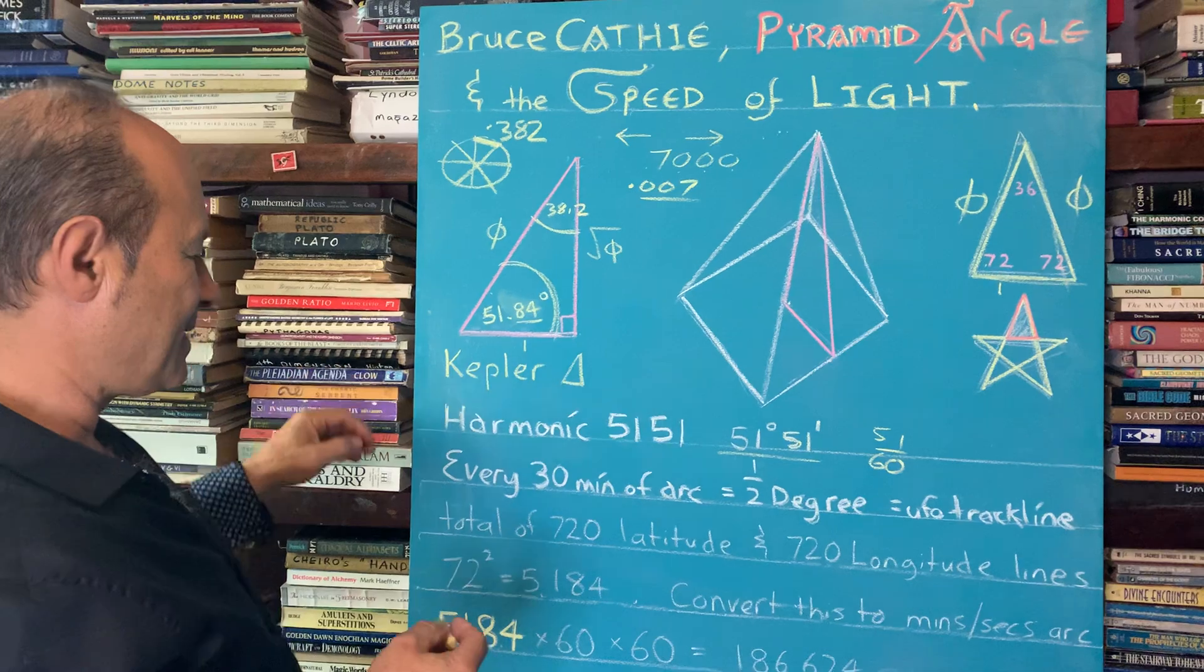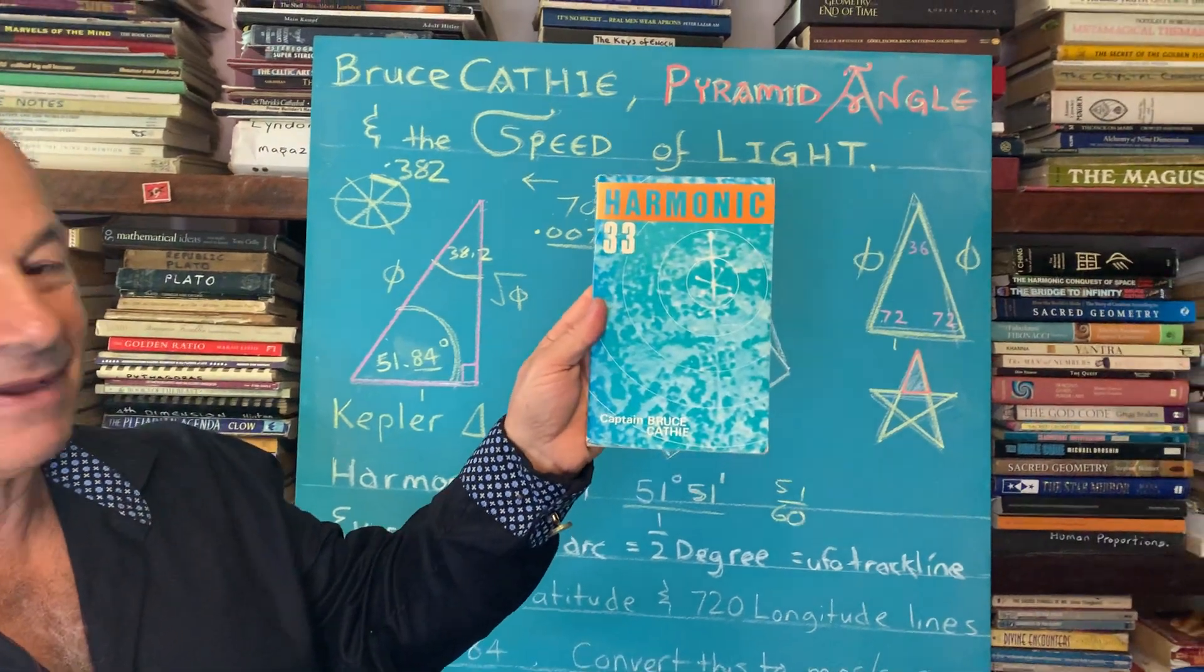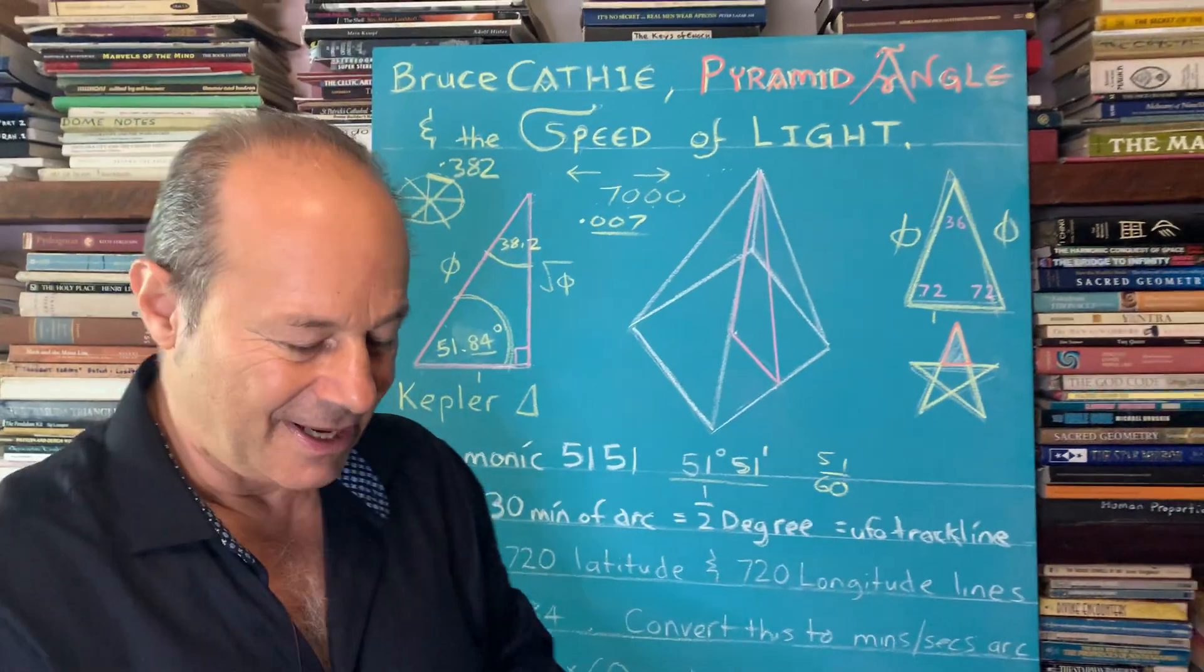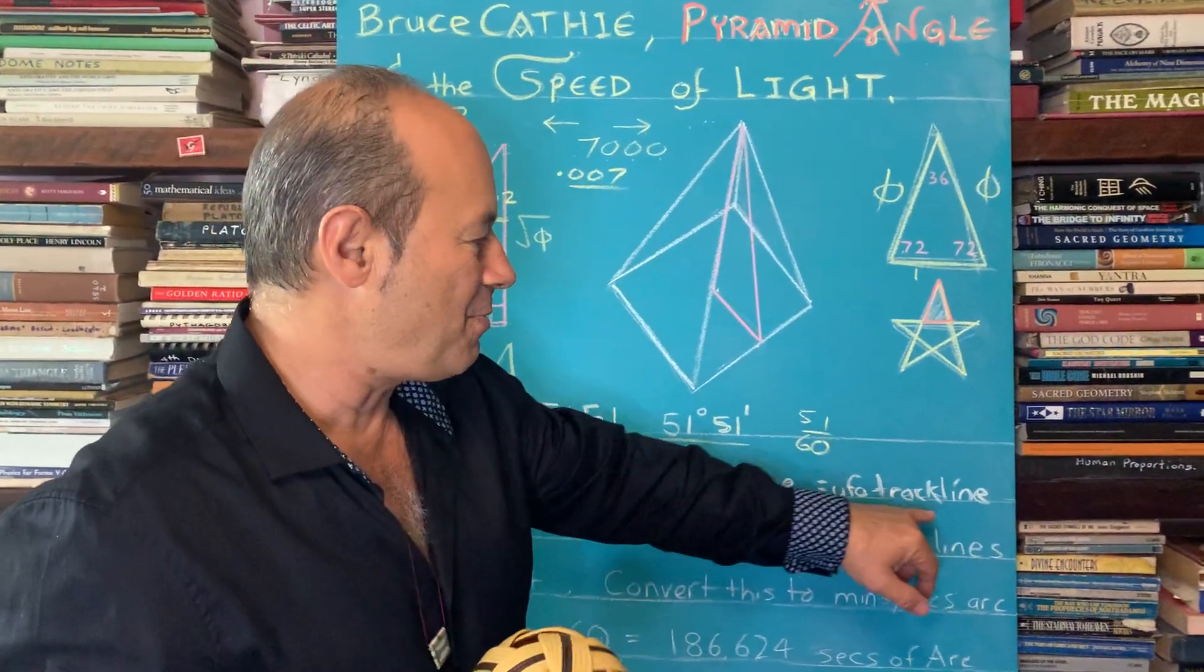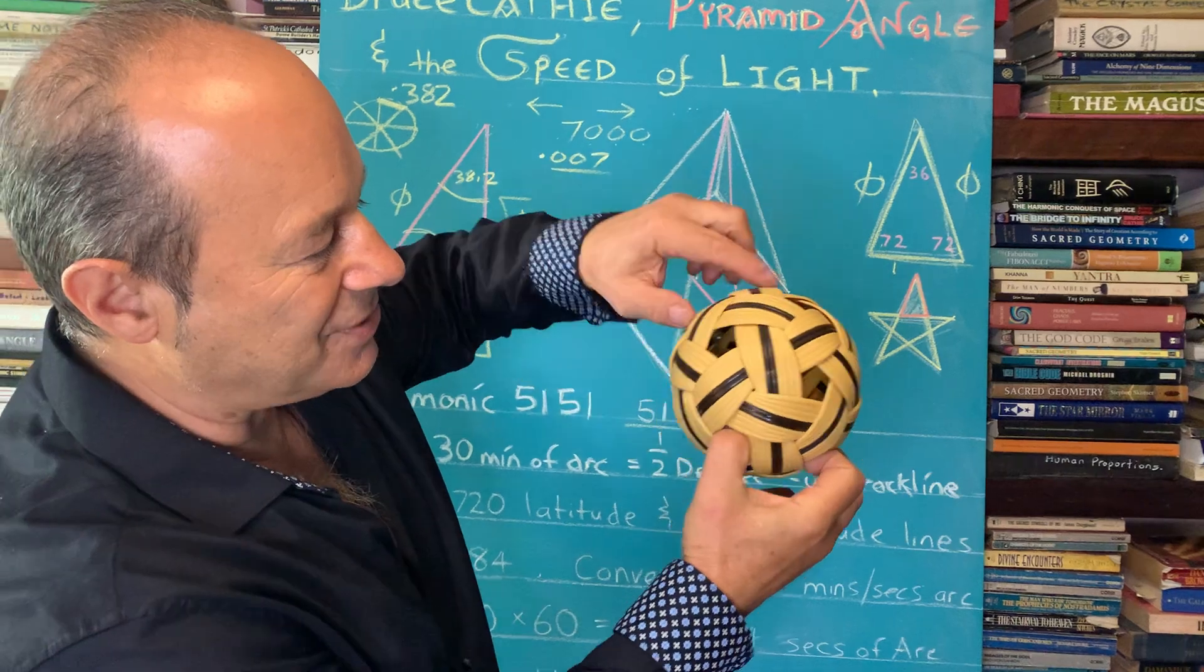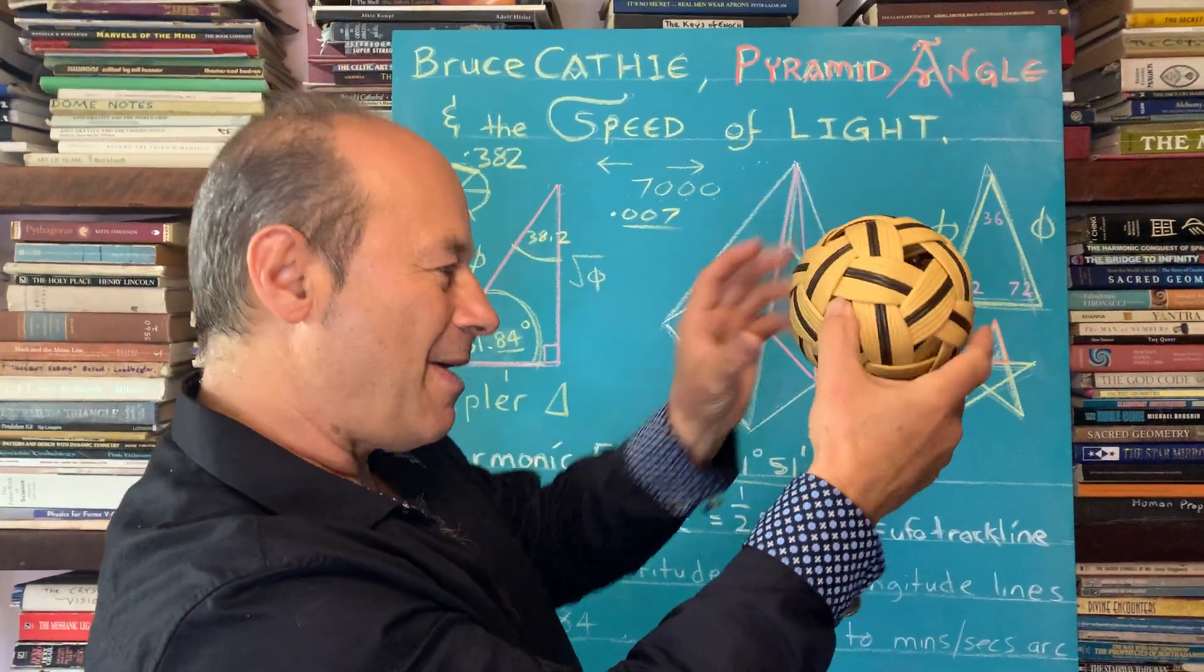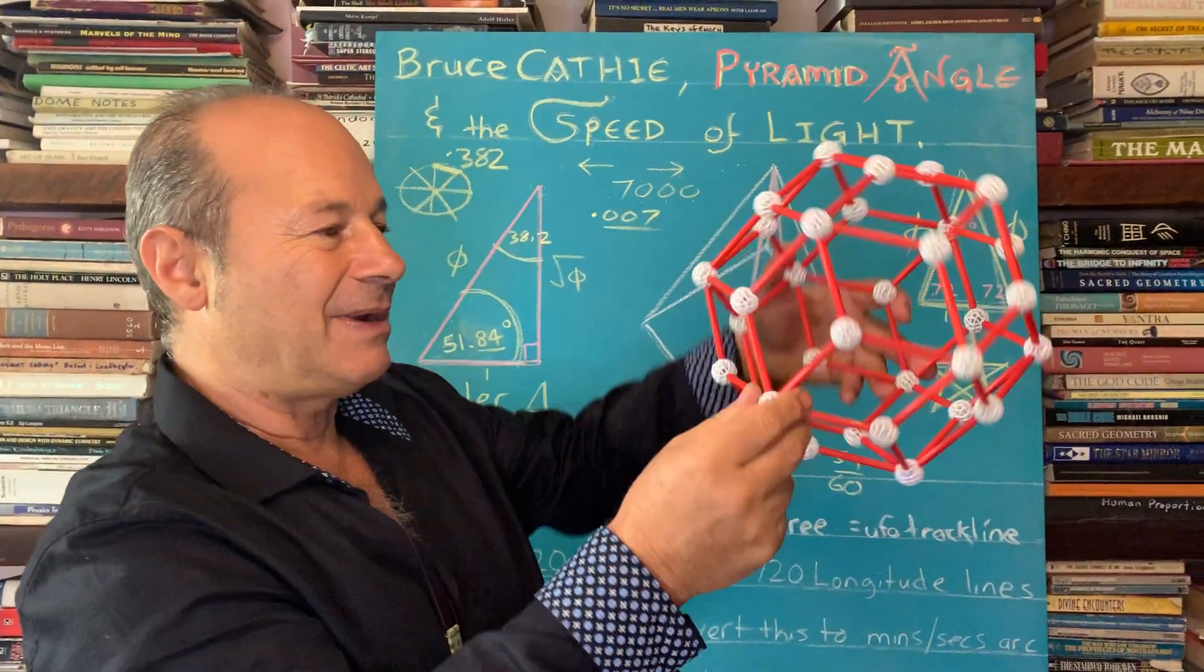What happened was Bruce Cathie, who is the author of Harmonic 33, he gave us the grid lines around the planet. He also wrote this book, Harmonic 695, the energy grid, the pulse of the universe. What he did was he calculated, as he was tracking UFOs as a commercial pilot, he's in New Zealand here, and he might have seen a plane go in that direction. So over the years, he started drawing track lines. He met other people around the world who saw UFOs, and they started connecting the dots and ended up with some kind of three-dimensional grid.